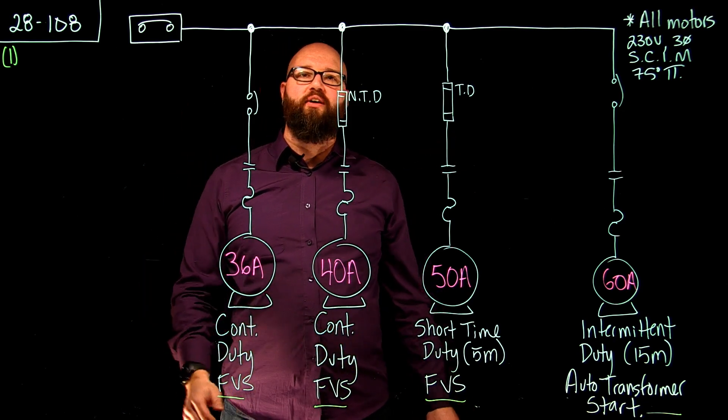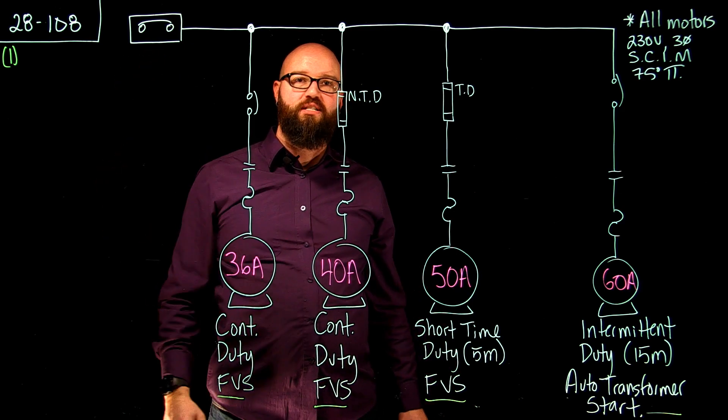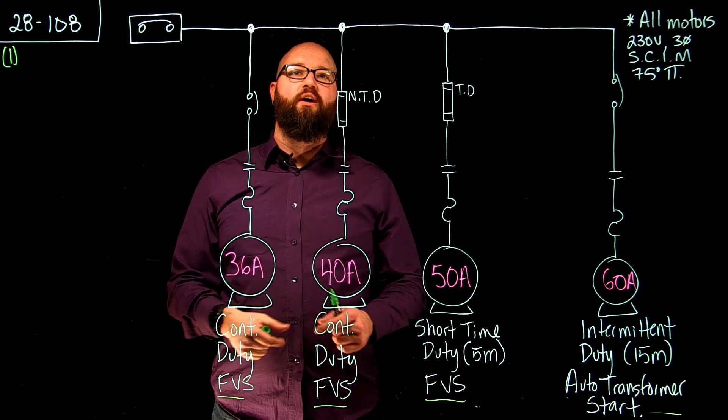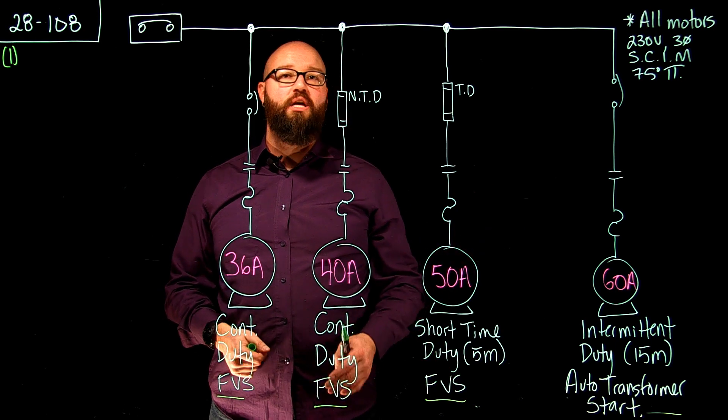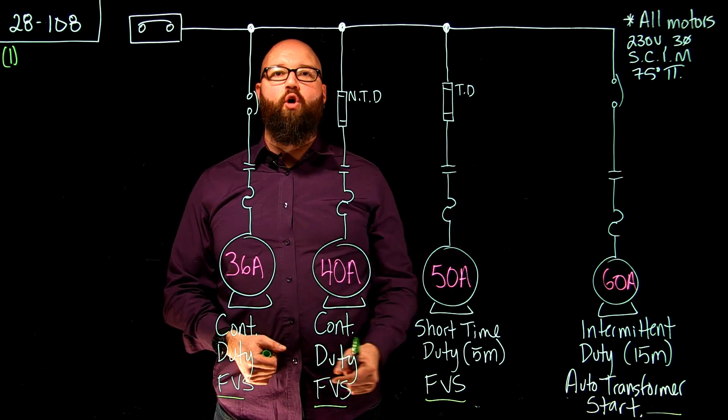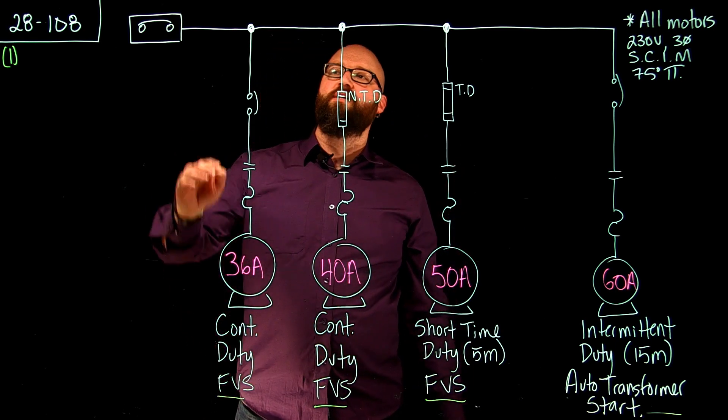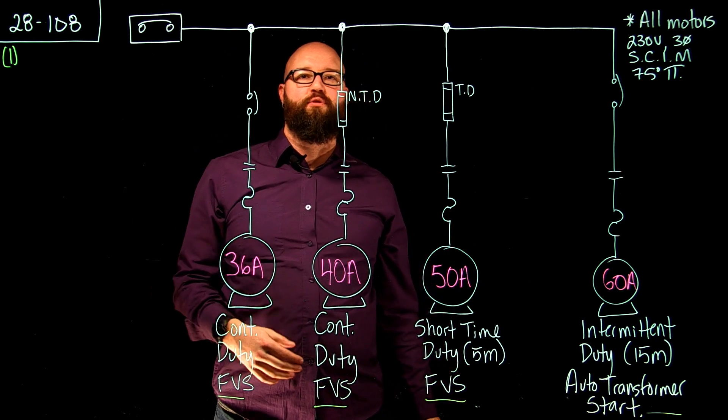In previous videos we looked at calculating the main feeder overcurrent device and in other videos we looked at calculating individual branch circuit conductors and individual branch circuit overcurrent devices. Again, we're focusing on just this feeder conductor for the bank of motors.